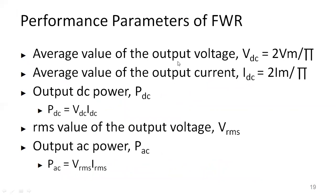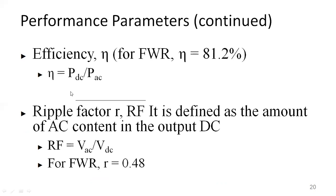The average value of the output voltage, Vdc, is 2Vm/π. The average output current Idc is 2Im/π, and the output DC power is Vdc times Idc. The RMS value of the output voltage is Vm/√2, and the RMS value of the output current is Im/√2. The output AC power is Vrms times Irms. The efficiency is calculated as DC output power divided by AC input power, which equals 81.2 percent.